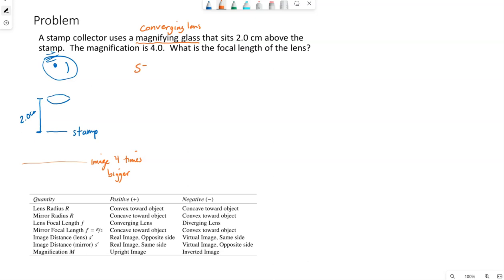So S, the distance from the stamp to the lens is two centimeters. Magnification is positive four.